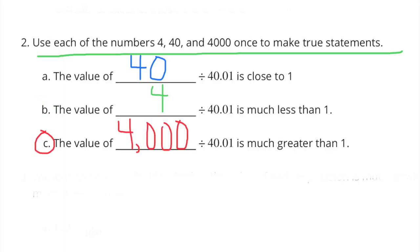C: the value of 4,000 divided by 40 is much greater than 1. This is true because the value of the dividend is much greater than the value of the divisor.